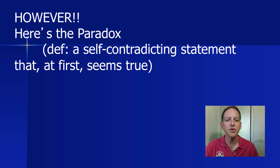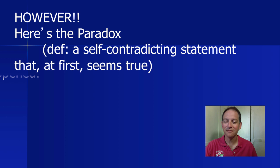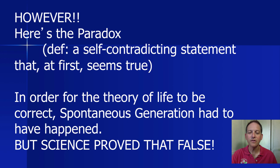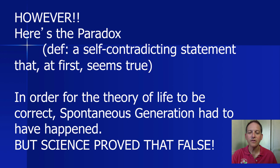However, here's the paradox — a paradox is a self-contradicting statement that at first seems true. In order for the theory of life to be correct, spontaneous generation had to have happened. But scientists proved that spontaneous generation was wrong. So which one is it? That should lead to more discussions in class. Now add a summary to the bottom of your sheet, answer the questions I asked you, and we'll discuss this in class. See you next time.